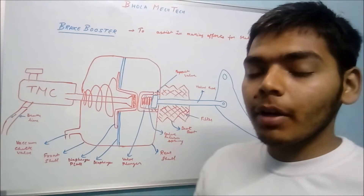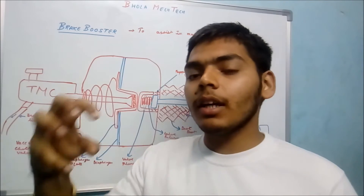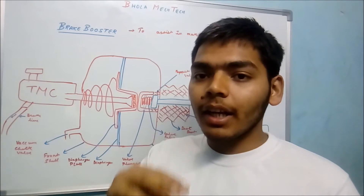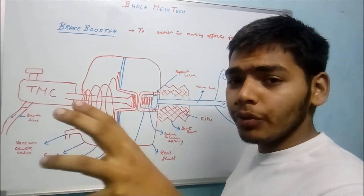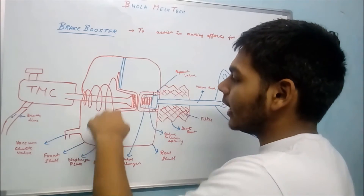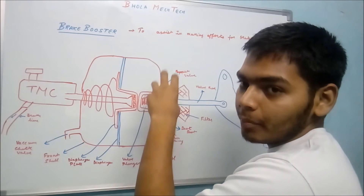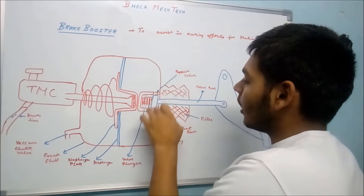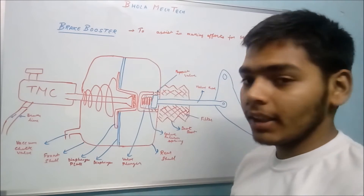In the initial state, the vacuum check valve is connected to the intake manifold of the engine. In the intake manifold, during the suction stroke, negative pressure is created, which sucks in the air-fuel mixture. By connecting the intake manifold to the vacuum check valve, that suction is also applied to this chamber, creating vacuum on this side of the brake booster. On the other side, the chamber is completely sealed in the initial state. There are two ports through which air can enter this chamber, but only when the push rod displaces.